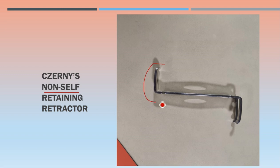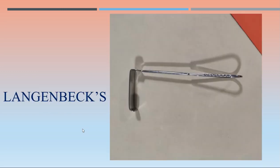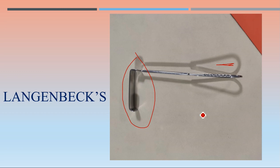Deaver retractor has a bifurcation at one end, and the instrument is hollow in that region — a shadow clearly shows there is a hollow here. This type of retractor is a Deaver non-self-retaining retractor. Then Langenbeck retractor — again non-self-retaining, a long one that is hollow to make it lighter and lightweight.